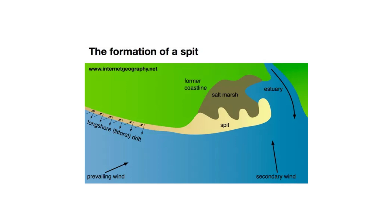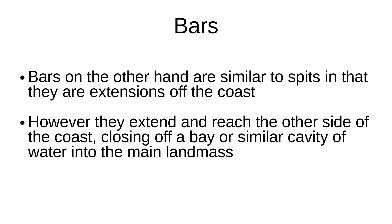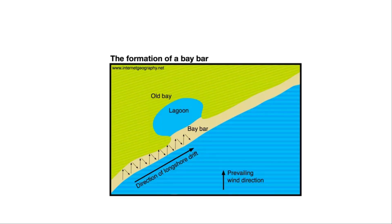An example of a spit in the UK is Spurn Head in Easington. Bars, on the other hand, are similar to spits in that they are extensions off the coast. However, they extend and reach the other side of the coast, closing off a bay or similar cavity of water into the landmass.